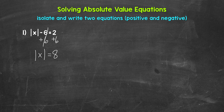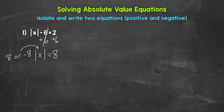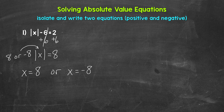So now we have the absolute value of x equals eight. Keep in mind, the absolute value of positive eight equals eight, and the absolute value of negative eight equals eight. So x can be eight or negative eight — this is where we write two equations. We have two options, two scenarios, giving us two solutions: x equals eight or x equals negative eight. The variable is already isolated, so we are done here. These are our two solutions.